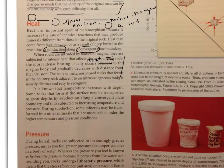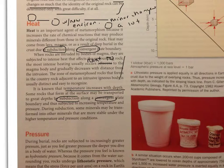It is known that temperature increases with depth. That sounds important. Temperature increases with depth. Some rocks that form at the surface may be transported to great depths by subduction—that word again—along with a convergent plate boundary and thus subjected to increasing temperature and pressure. During subduction, some minerals may be transformed into other minerals that are more stable under higher temperature and pressure conditions.